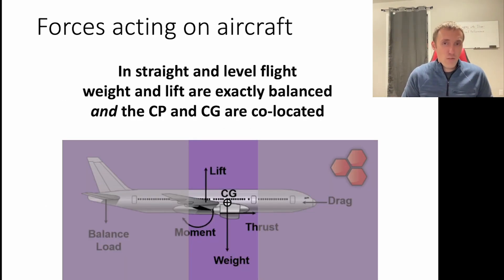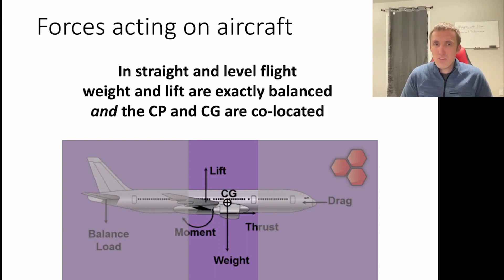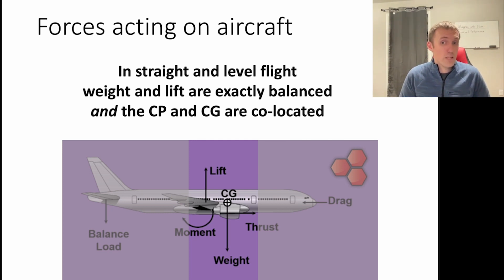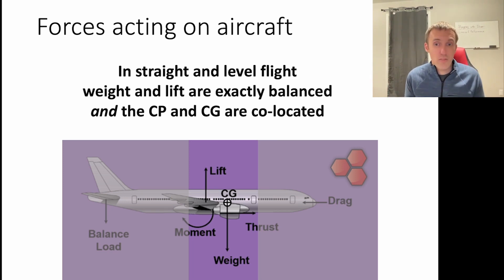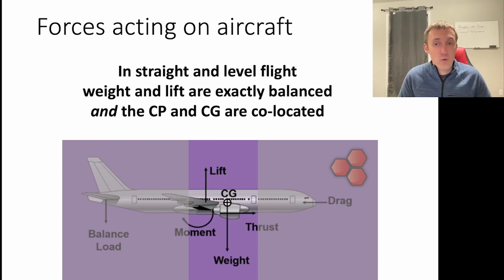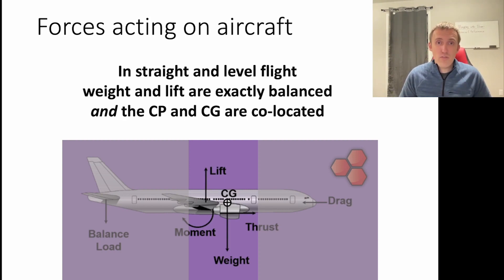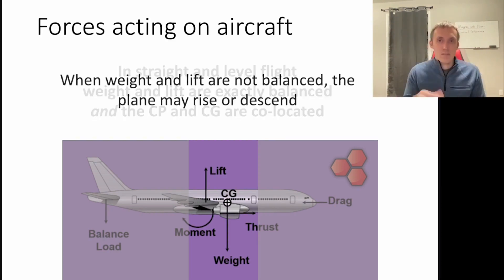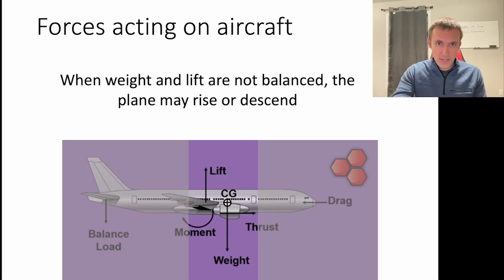In straight and level flight, weight and lift are exactly balanced. In straight and level flight, the aircraft is not moving up or down, and it's not speeding up or slowing down. If weight were greater than lift, the aircraft would have to move down — those forces would not be in balance. This is Newton's first law: when all forces are balanced, there's no acceleration in any direction. So in straight and level flight, lift must exactly balance weight, and when they're not balanced, the plane may rise or descend.